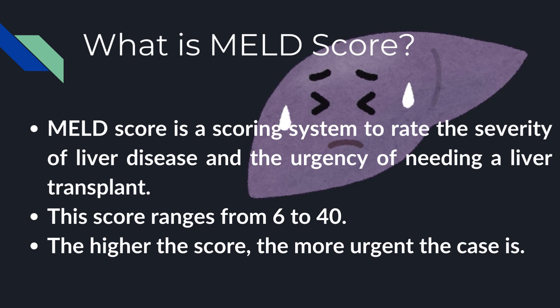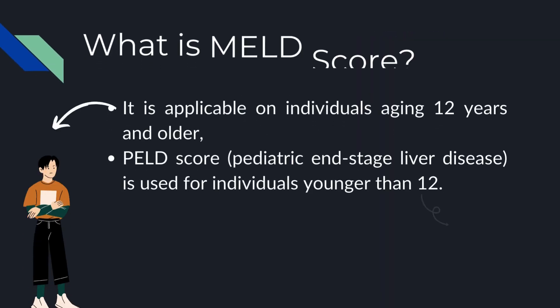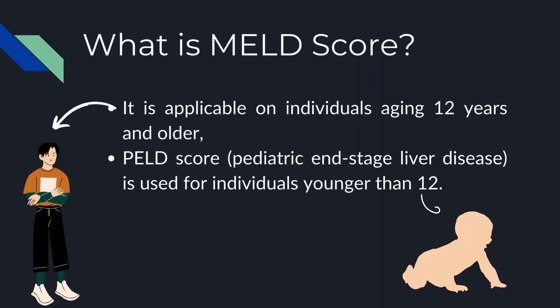This score ranges from 6 to 40. The higher the score, the more urgent the case is. It is applicable on individuals aging 12 years and older. MELD Score, also known as pediatric end-stage liver disease, is used for individuals younger than 12.